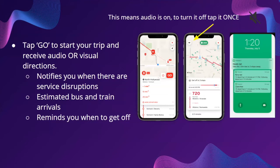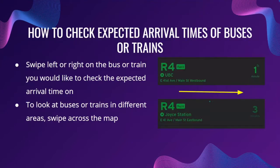Go mode allows you to receive audio and/or visual directions. It will notify you when there are any disruptions in service, provide estimated bus and train arrival times, and remind you what stop to get off at. To check the expected arrival times of buses or trains, you can swipe left or right on the bus or train you want to check. If you want to look at buses or trains in different areas, you can swipe across the map to find them.